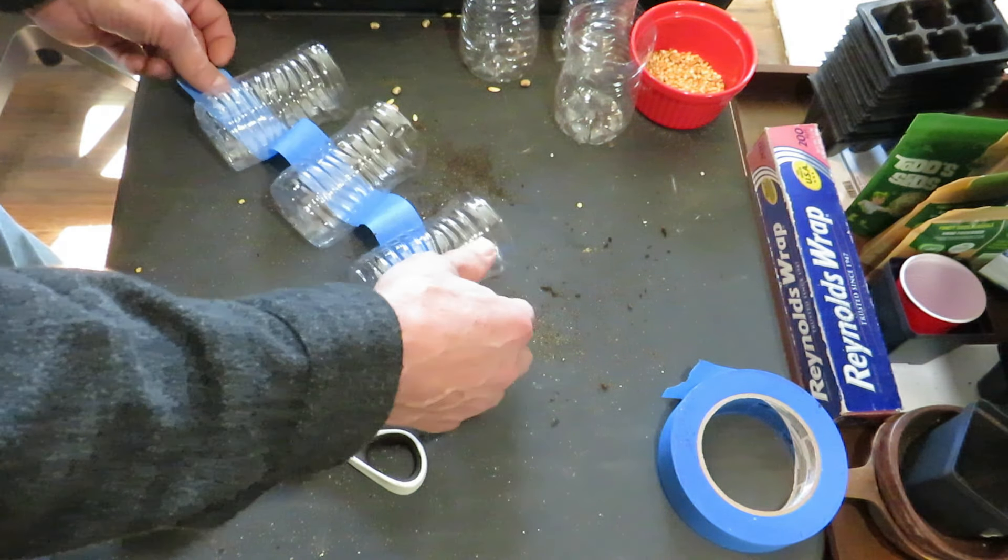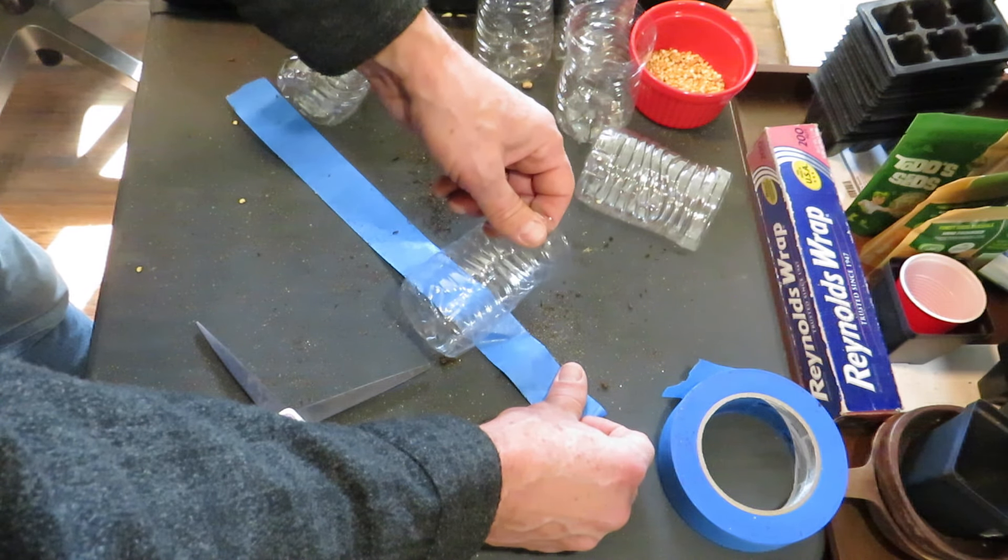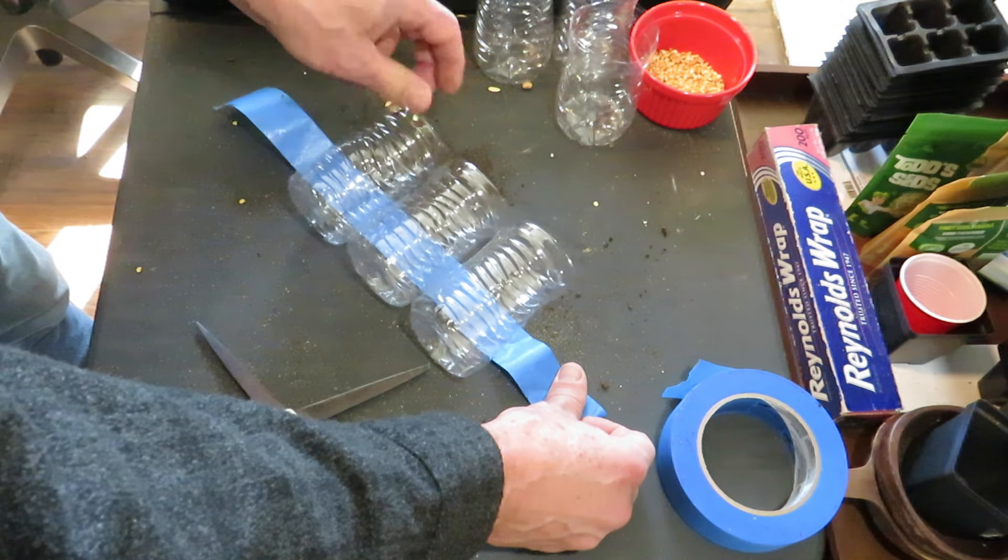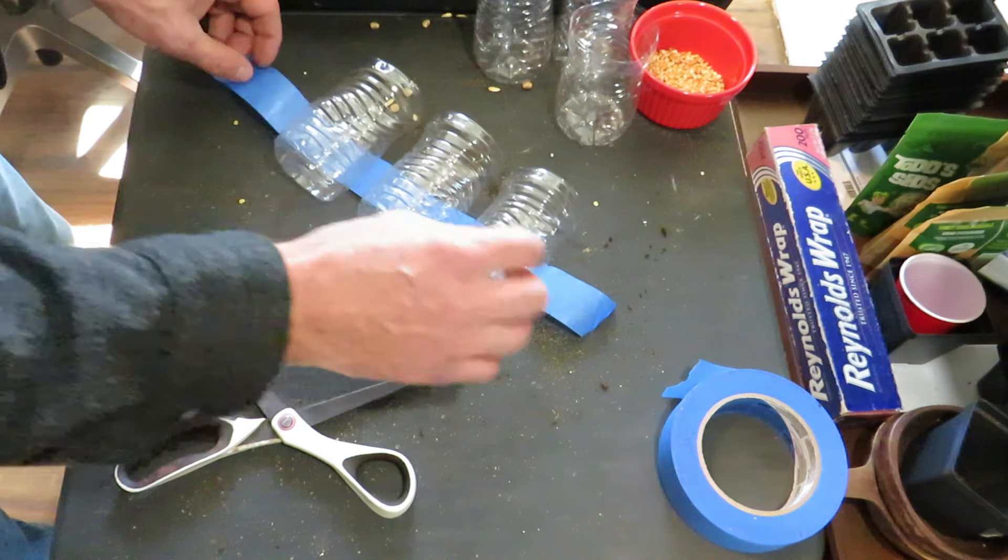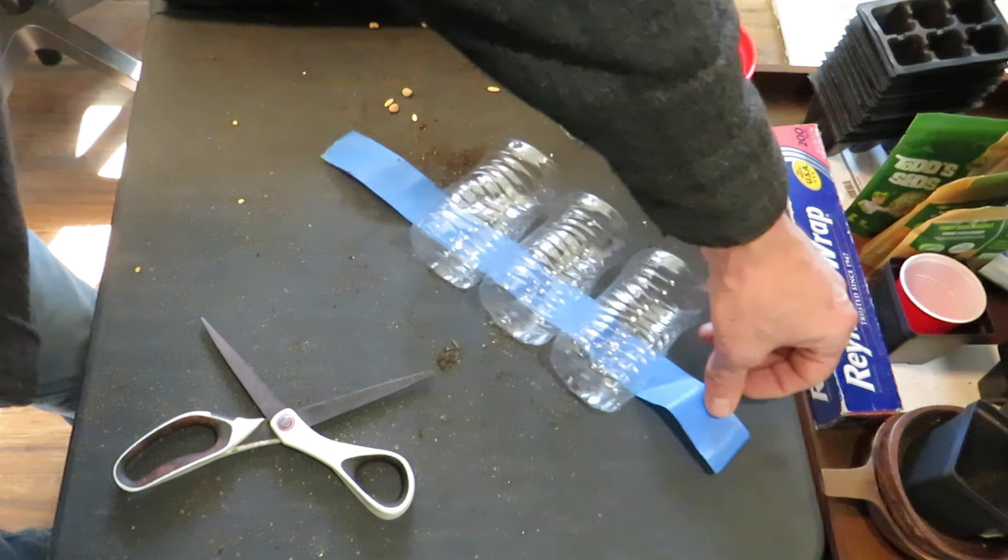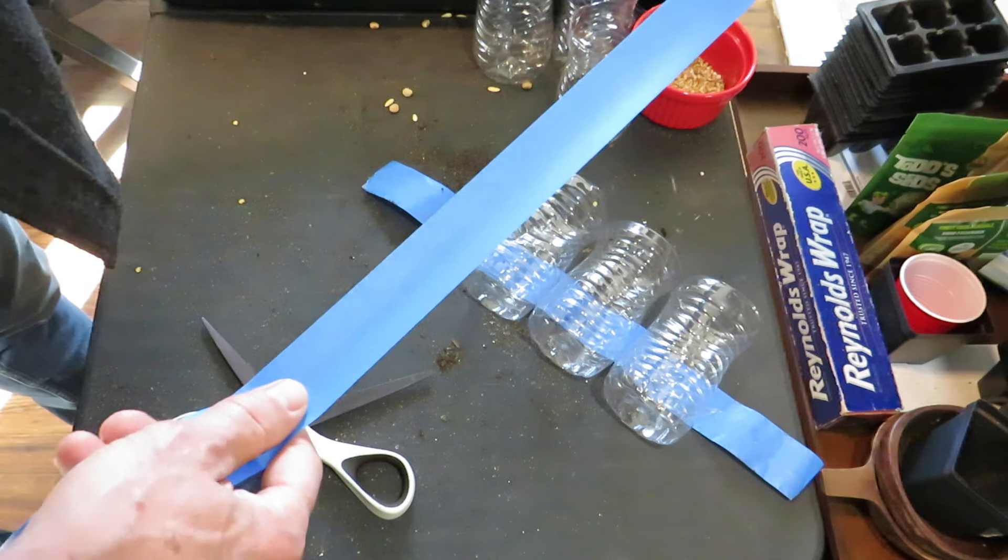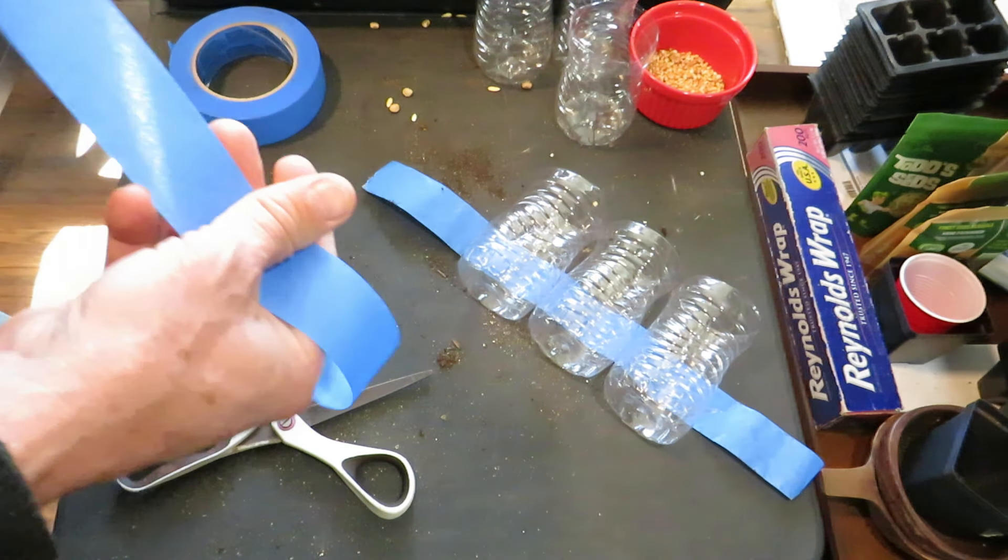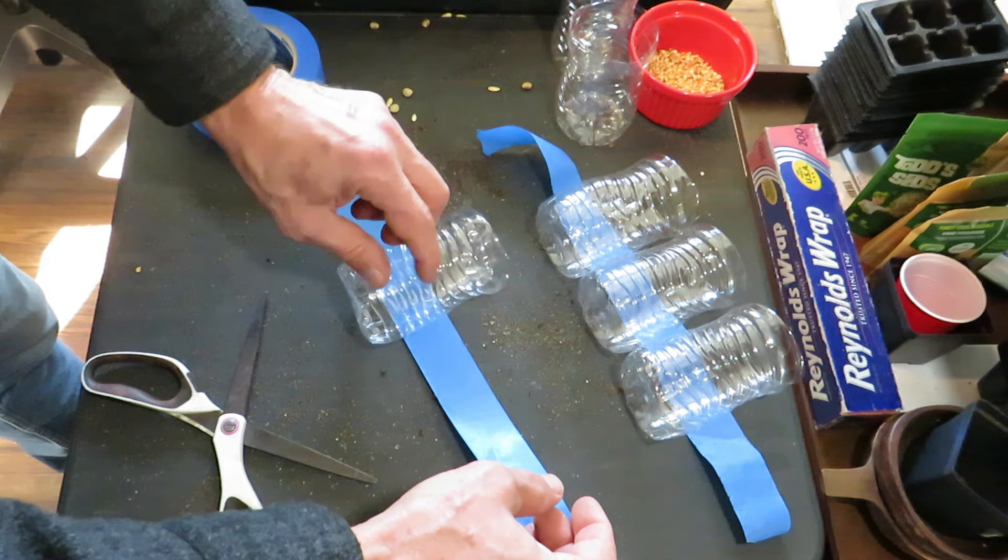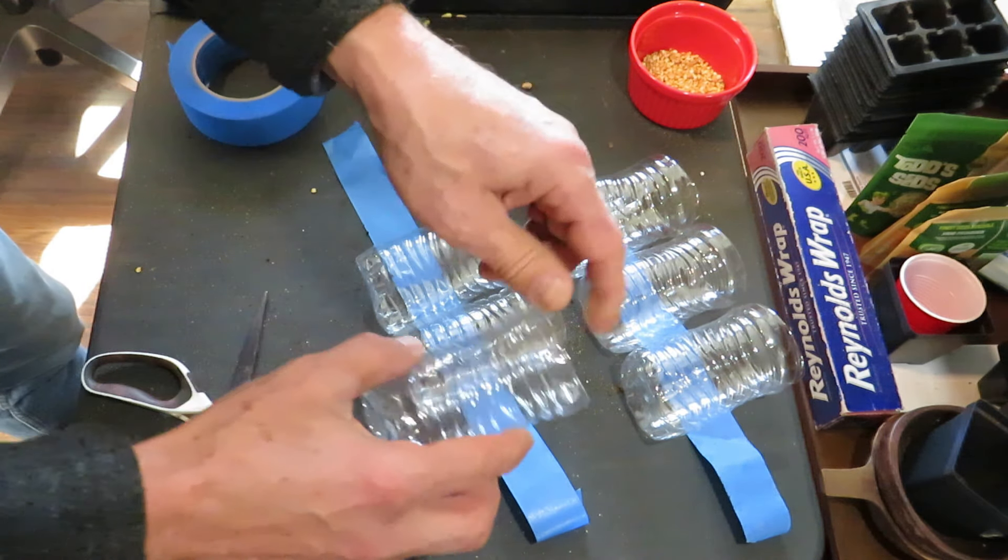Now, maybe you want to do a six pack. So what you're going to do is just put them right next to each other with about this much tape left over. You're going to roll a little bit, but something like that. And then you're going to do the second six pack or the second three to make a six pack of containers to grow in.